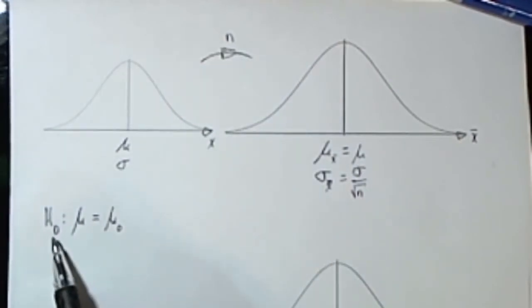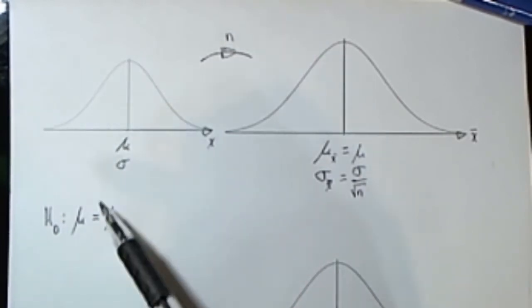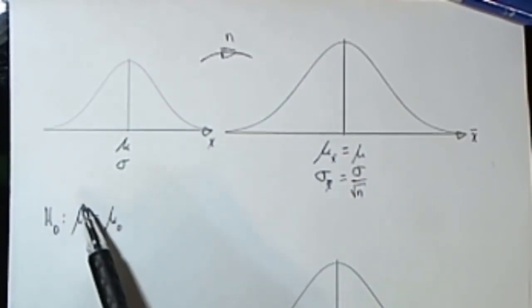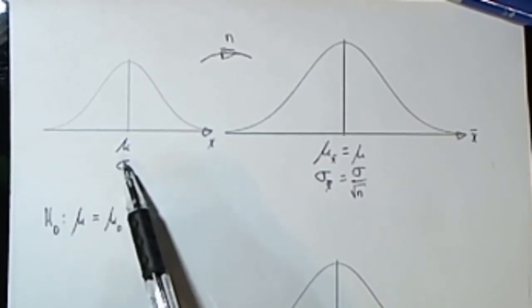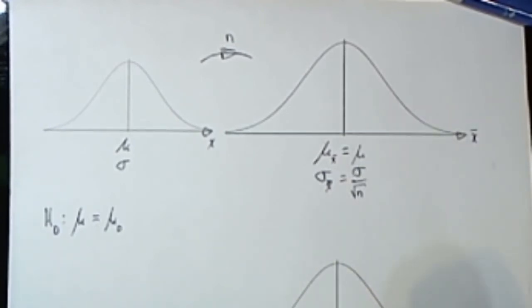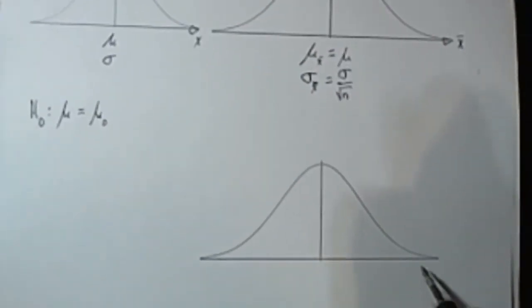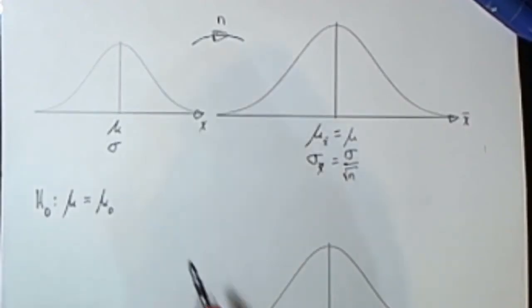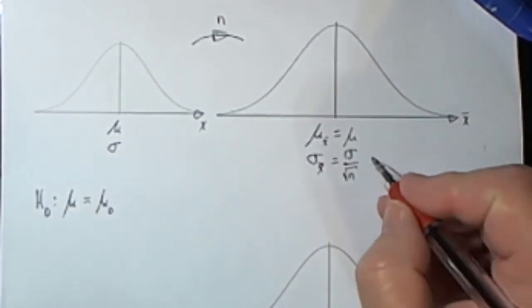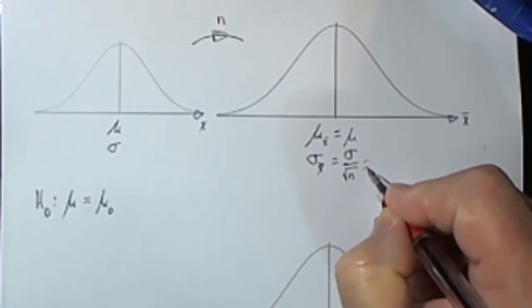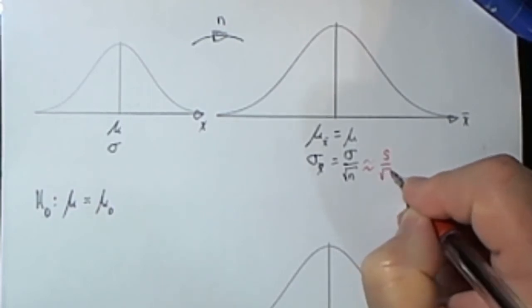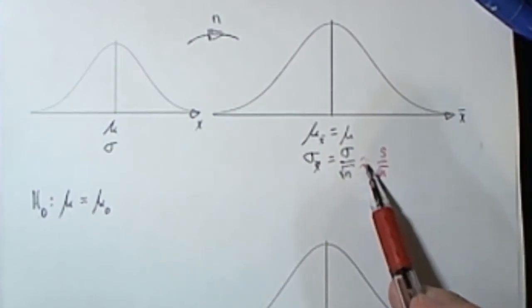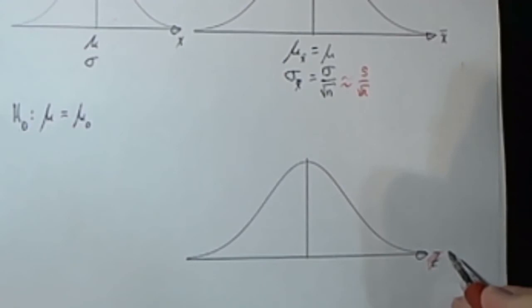In a hypothesis test, there's going to be a null hypothesis that states that the mean of this distribution is equal to some particular value. If we assume that that opinion is correct, then we now know what this mean is. If we also know what the standard deviation of this is, then we could convert all of those things to a standard normal curve. The problem is that we seldom know what the standard deviation of this population is — so we're going to need to approximate this by the sample standard deviation divided by the square root of n. Because we had to do this approximation, we will use a t-test instead of a z-test.